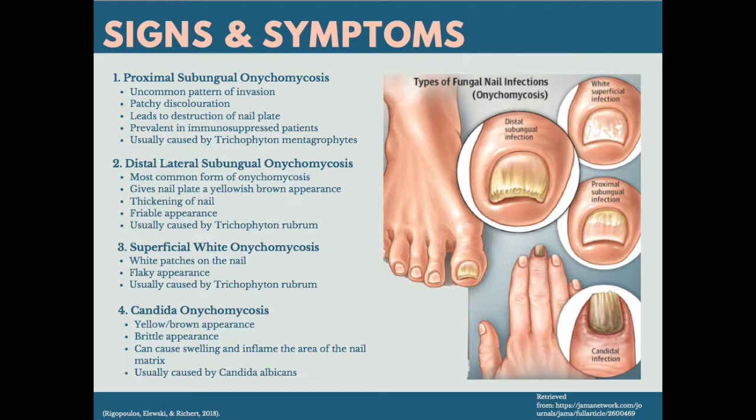Superficial white onychomycosis is recognised by its white, powdery and flaky appearance. The infection affects the nail plate rather than the nail bed, and is also caused by Trichophyton rubrum.